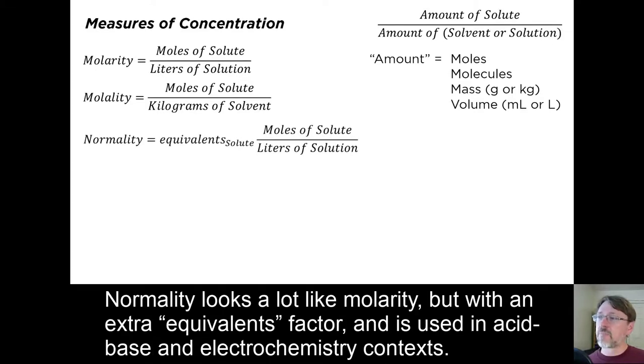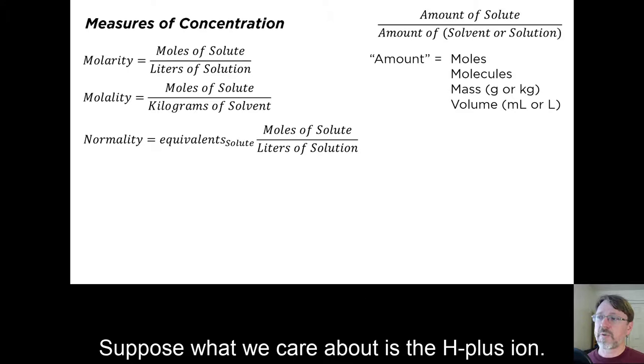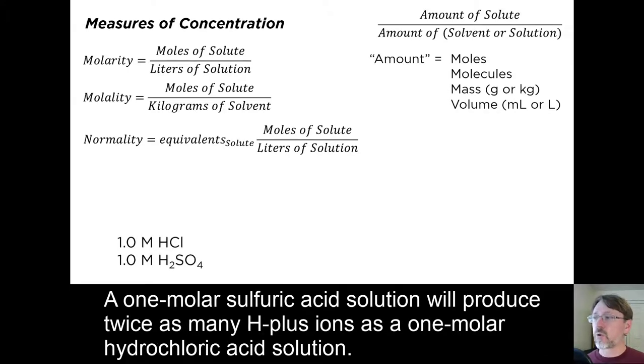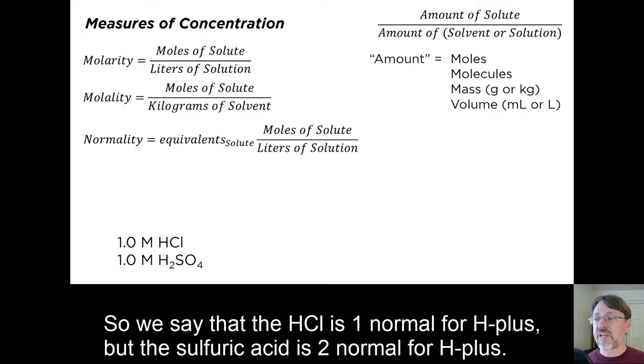Normality looks a lot like molarity, but with an extra equivalence factor, and it is used in acid-base and electrochemistry contexts. Suppose what we care about is the H-plus ion. A one molar sulfuric acid solution will produce twice as many H-plus ions as a one molar hydrochloric acid solution. So we say that HCl is one normal for H-plus, but sulfuric acid is two normal for H-plus.